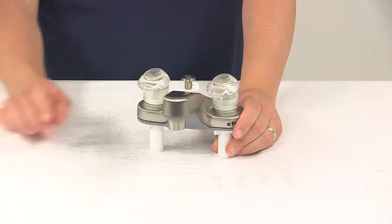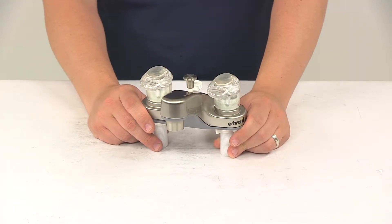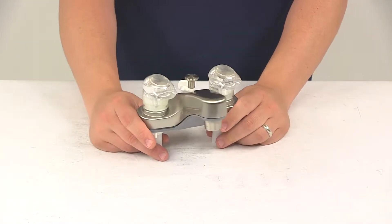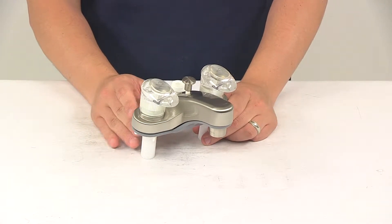Today we're going to be taking a look at the Phoenix Faucets 4-inch Dual Handle RV Bathroom Diverter Faucet. This unit adds or replaces a bathroom faucet in your RV. It's ADA compliant and features a completely lead-free design.